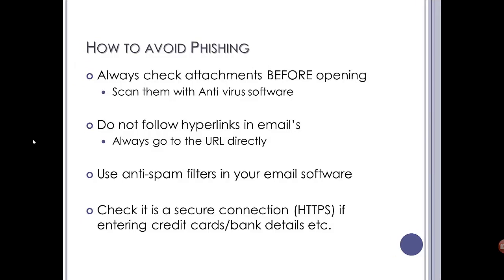So how to avoid phishing? Well, particularly if you get any attachments, check what file you're actually opening — it may look like a PDF but it's in fact a zipped up application program. Always scan your attachments with virus software. If in doubt, don't open it at all. Don't follow hyperlinks in emails. Always open up a browser or use a bookmark and go to the site that you know — go to the URL directly so you can't be redirected. You can get an extra bit of assistance from anti-spam filters in your mail software, and always make sure that you have a secure connection — i.e., it says HTTPS in your browser.